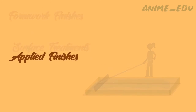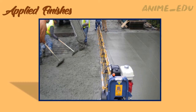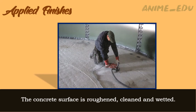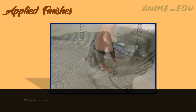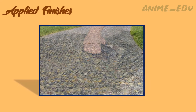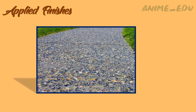Applied Finishes. Generally, the exposed surfaces of the concrete elements must be modified to give a pleasant appearance. The concrete surface is roughened, cleaned, and wetted. Over this, a cement mortar of ratio 1 to 3 is applied. Above the mortar, sand or pebble rendering can be done to provide sufficient finishes.